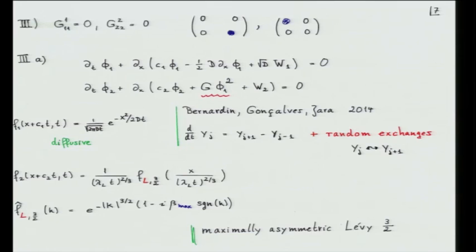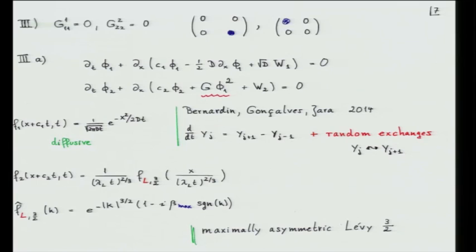The first component will simply be diffusive — moving with velocity c_1. The claim is that when I look at the second component, it moves with c_2, but you will see the Levy distribution — the alpha-stable law with the exponent 3/2, in its completely maximally asymmetric version. The Fourier transform of the scaling function looks like e to the minus k to the 3/2, with an extra phase factor, and beta at its maximum value — the maximum asymmetric Levy 3/2 distribution.